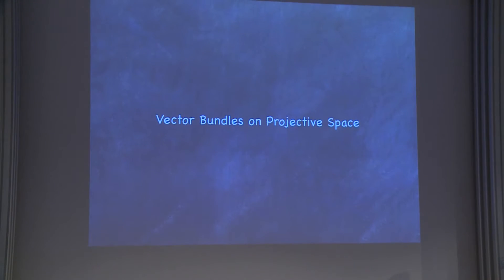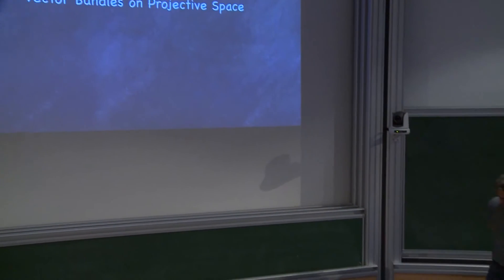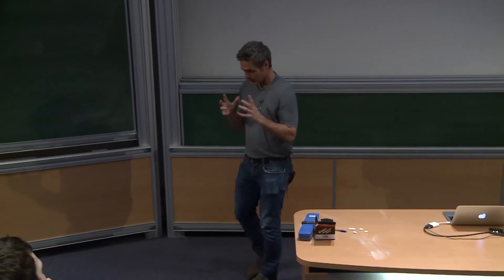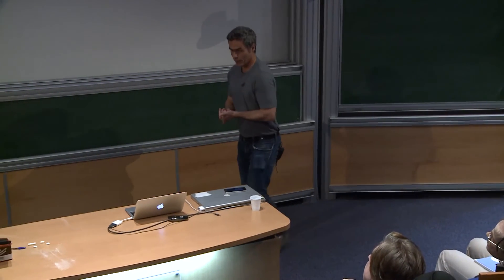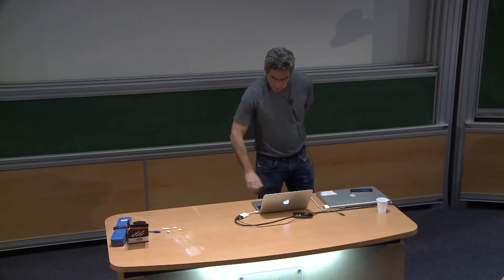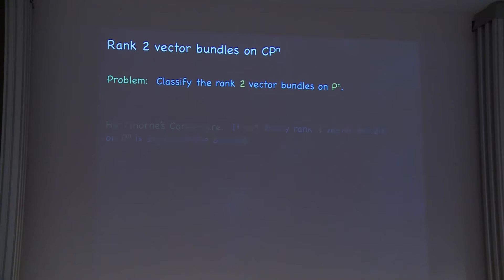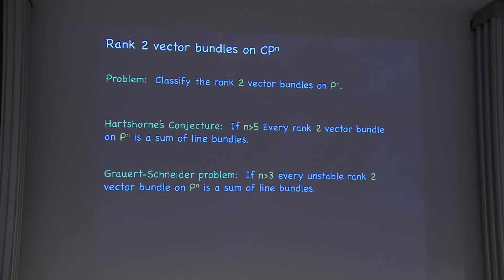Where I think we're starting to see some interesting progress is in the kinds of varieties that are as far from the Hodge conjecture as you can be — the problem of classifying algebraic vector bundles on projective space. Line bundles we know; the first interesting case is classifying rank-two bundles on projective space. That's a very famous problem — there's Hartshorne's conjecture, which says that if n is greater than five, every rank-two bundle is a sum of line bundles. I want to mention the Grauert-Schneider problem, which says every unstable rank-two bundle — unstable in the Mumford sense — on Pⁿ is a sum of line bundles, for n four and on.